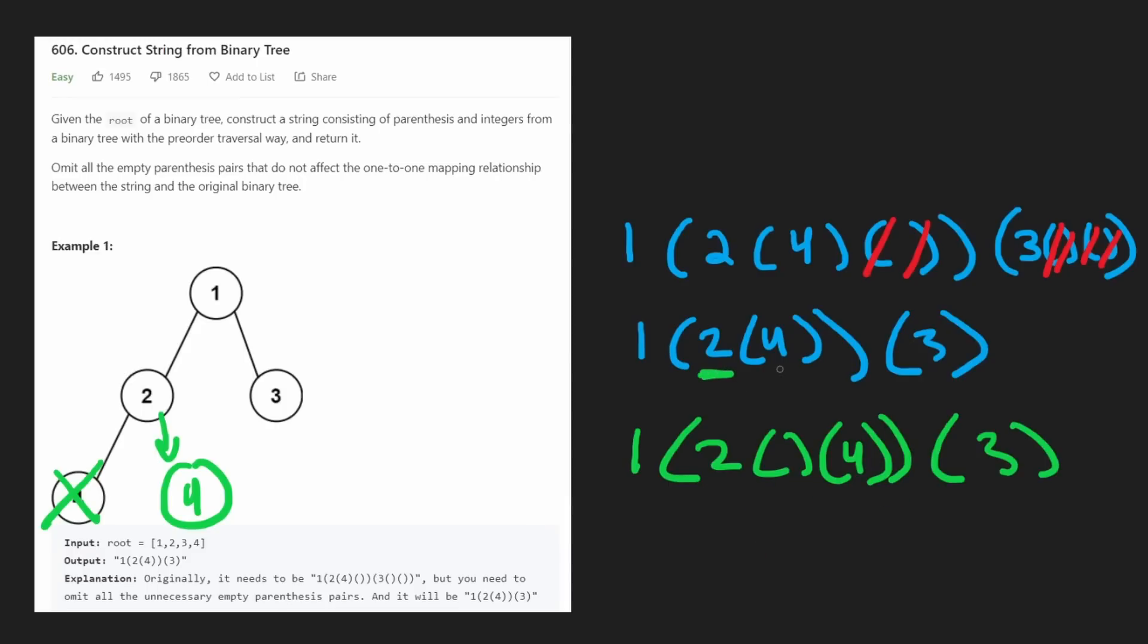Here, we knew that two had a left child, but it didn't have a right child. Basically, when the parentheses are at the end, then we can remove them. The empty parentheses, when they're at the end, we can remove them. Or the way I think about it is just if we have a node that doesn't have a left child, but it does have a right child, then we keep that pair of empty parentheses.